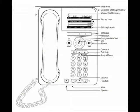The 9620 IP telephone buttons include a message waiting indicator, a missed calls indicator, a message button connecting you directly to your voicemail system, and a contacts button to view entries on your contact list.